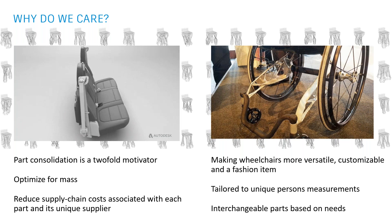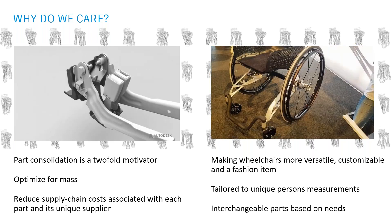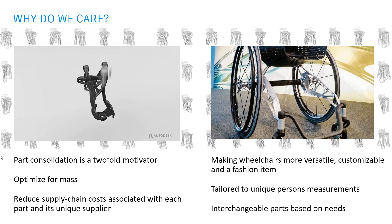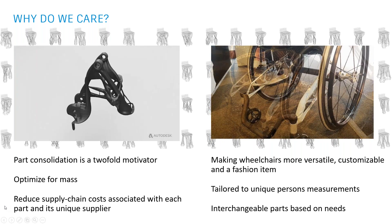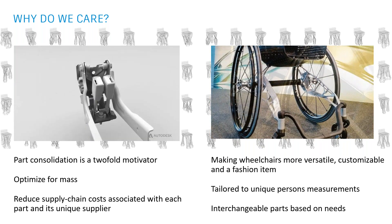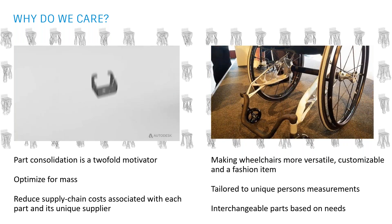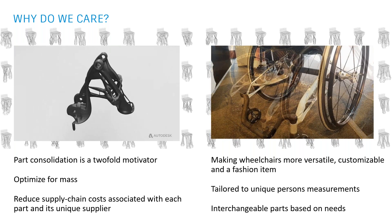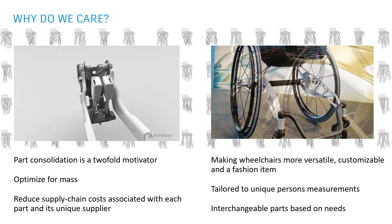By reducing to a single component rather than tracking multiple suppliers in a just-in-time fashion, everything is greatly simplified beyond just lightweighting. On the right-hand side is a wheelchair where some components have been generatively designed. The benefits there include lightweighting the chair to reduce effort to move around, and making parts interchangeable so each person can customize dimensions and preferences as they grow.